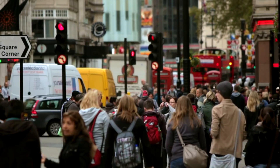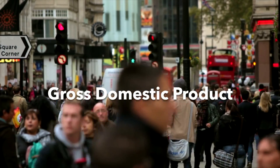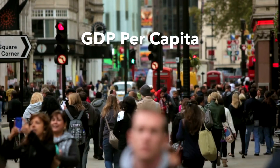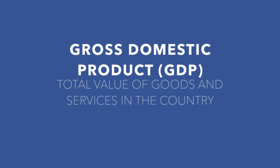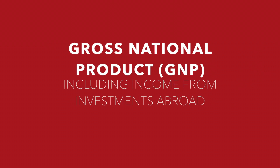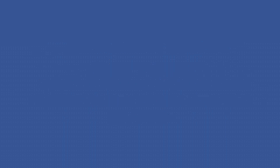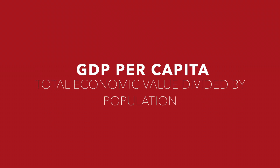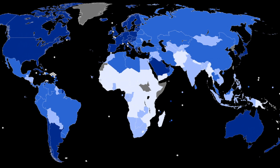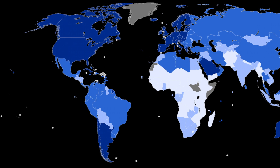When measuring economic development, there are four indices that must be taken into consideration. The advantages of using these factors as indicators of development are that it makes countries easily comparable and are easy to understand, giving us a good indication of the overall wealth of a country.